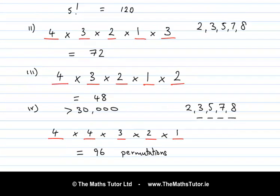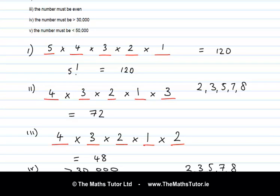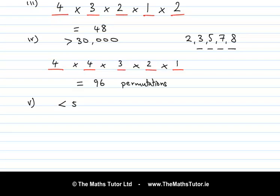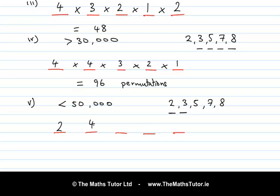Let's look at Part 5: the number must be less than 50,000. Choosing from 2, 3, 5, 7 and 8, with five slots. For a number to be less than 50,000, it depends on the first digit. A 2 would work there, or a 3. A 7 or 8 are not going to work, and 5 won't work either. So we only have 2 choices for the first slot. For the second choice, we've used one number, so 4 choices remain, then 3, 2 and 1. Multiplying: 2 × 4 × 3 × 2 × 1 = 48 permutations.